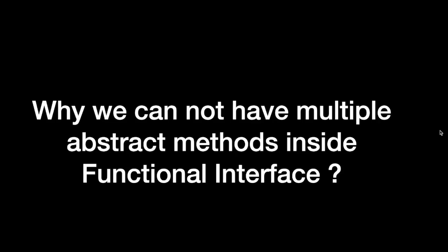Hello everyone, welcome to HJ Programming Solutions. In the last video we saw what is a functional interface and the different types of functional interfaces. We already know that a functional interface is an interface which contains only one abstract method and any number of default and static methods. In today's video we are going to see why we cannot have multiple abstract methods inside a functional interface.